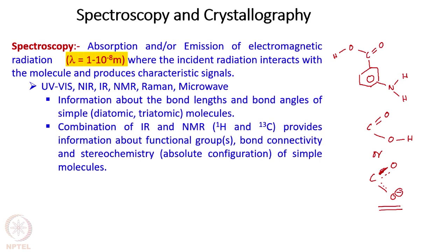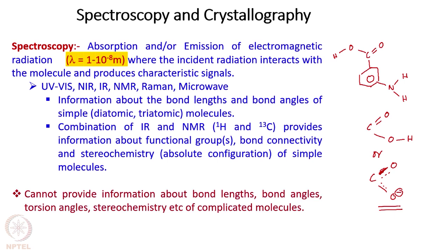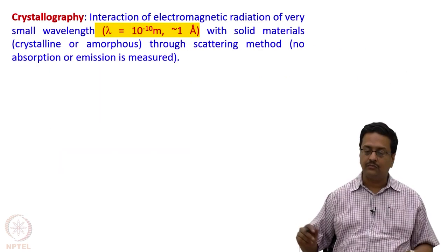Combination of IR and NMR spectrum provides information about the functional groups that are present in the compound; it gives the bond connectivity and sometimes we can derive the absolute configuration — that is the stereochemistry — of very simple molecules. But in case the molecule has multiple chiral centers, it becomes difficult to establish the absolute configuration of all those chiral centers. In a nutshell, spectroscopic methods cannot provide information about bond lengths, bond angles, torsion angles, stereochemistry, etc. of any complicated molecule, and most of these spectroscopic methods are done in solution state.